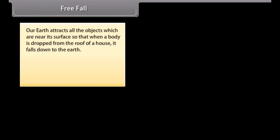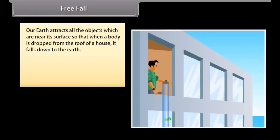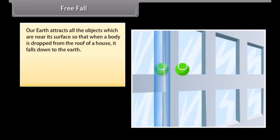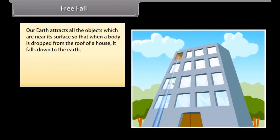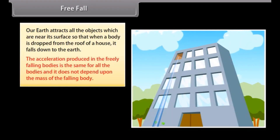Free fall. The earth attracts all objects near its surface, so when a body is dropped from the roof of a house it falls down to the earth. The acceleration produced in freely falling bodies is the same for all bodies and does not depend upon the mass of the falling body.